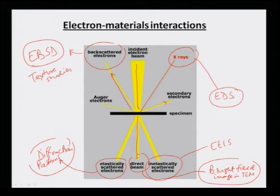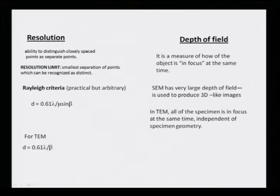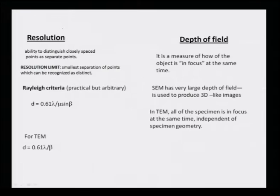In our subsequent lectures we shall discuss imaging in TEM — bright field and dark field images — as well as diffraction patterns and other contrast mechanisms. We shall also discuss EDS spectroscopy analysis, EBSD, and high-resolution microscopy. One more important feature of electron microscopes is the depth of field — a measure of how much of an object is in focus at the same time. If an object has a lot of surface undulations, can you bring different portions into focus simultaneously?